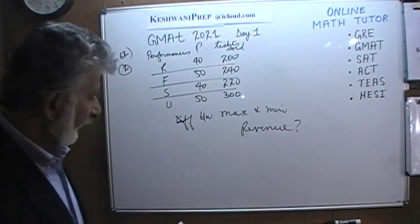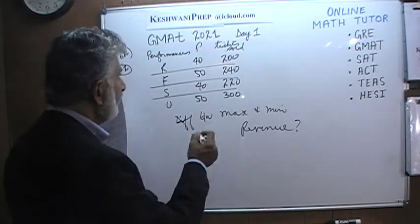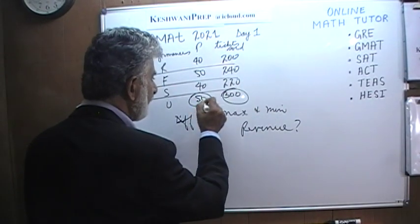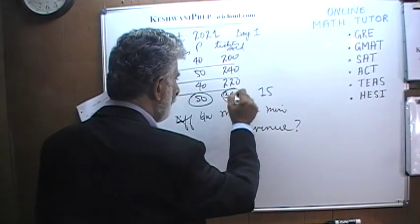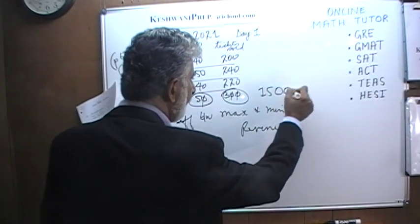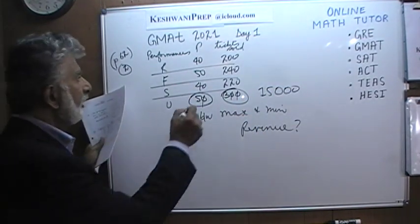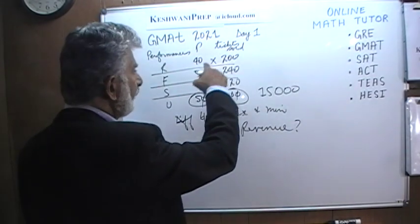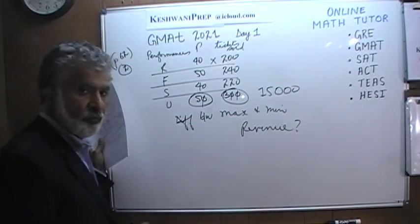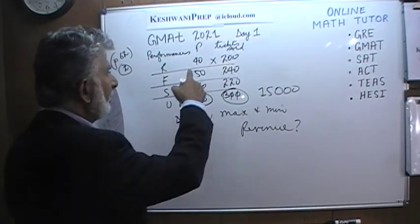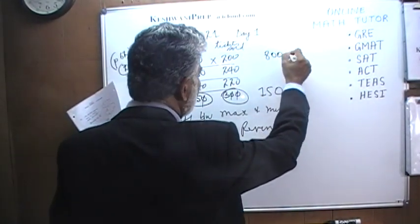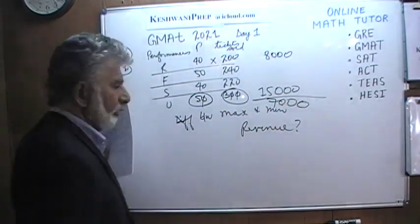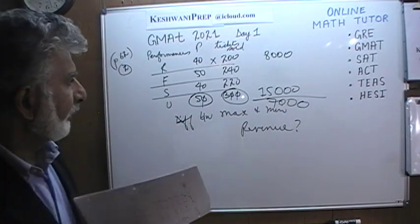That's pretty straightforward. The maximum is where we charge the highest price and sell the most tickets: 300 tickets at $50 each — three times five is 15, with three zeros — that's $15,000. The minimum revenue is 200 tickets at $40 each, which is $8,000. The difference is $7,000.